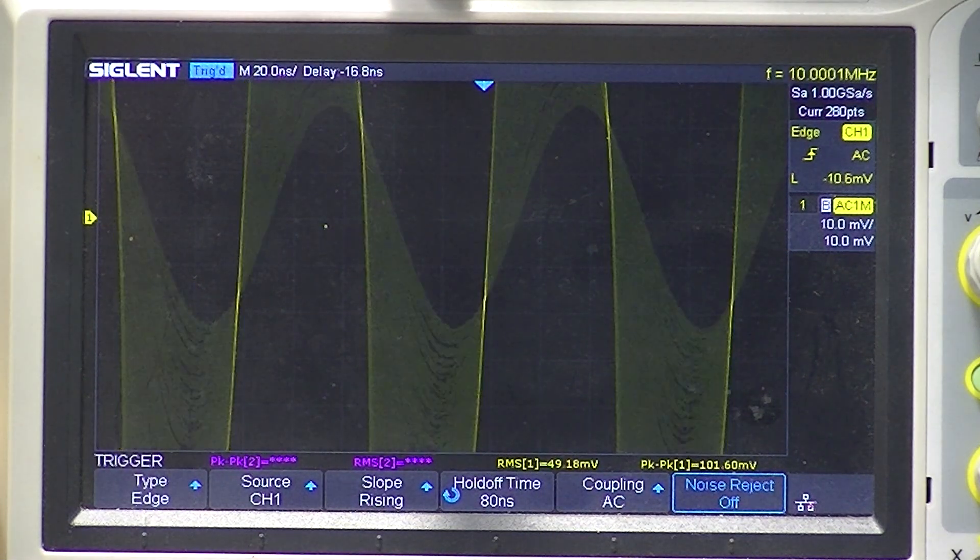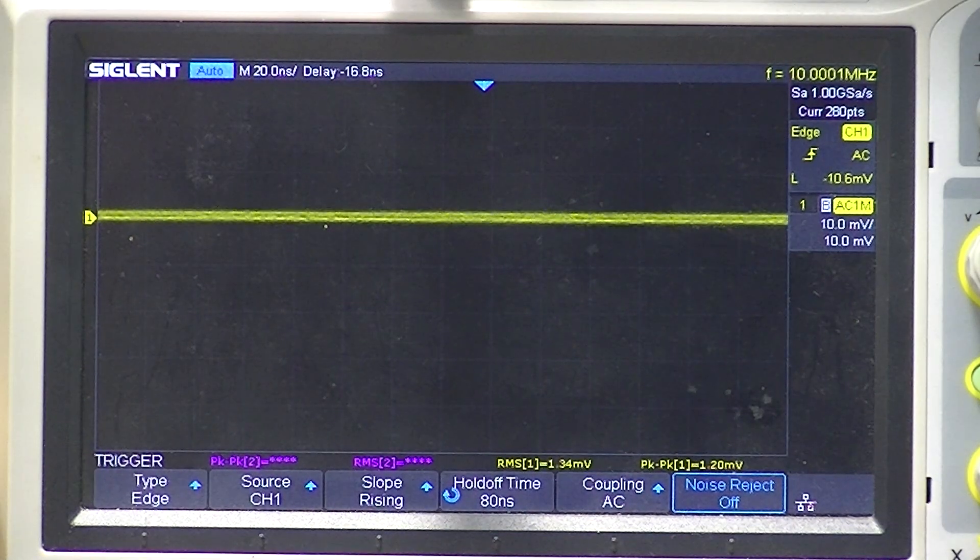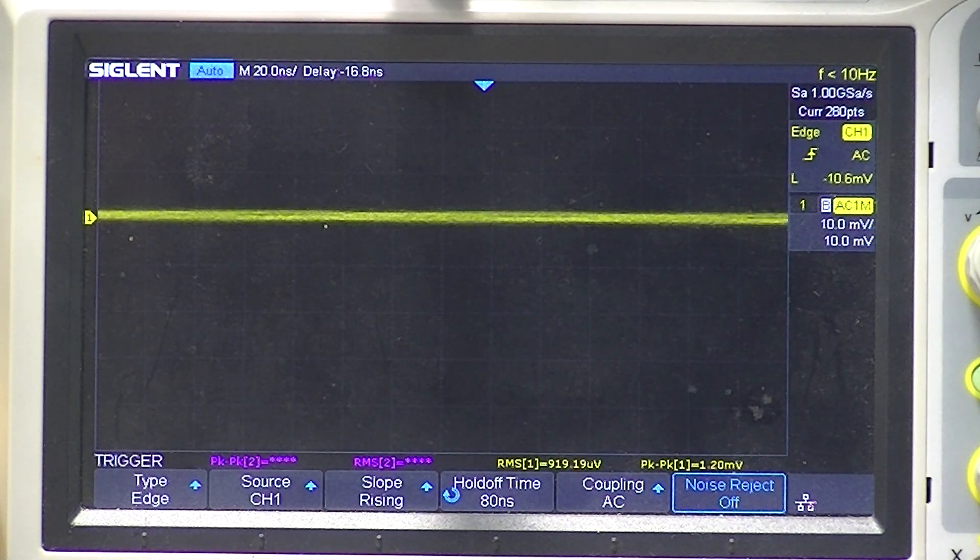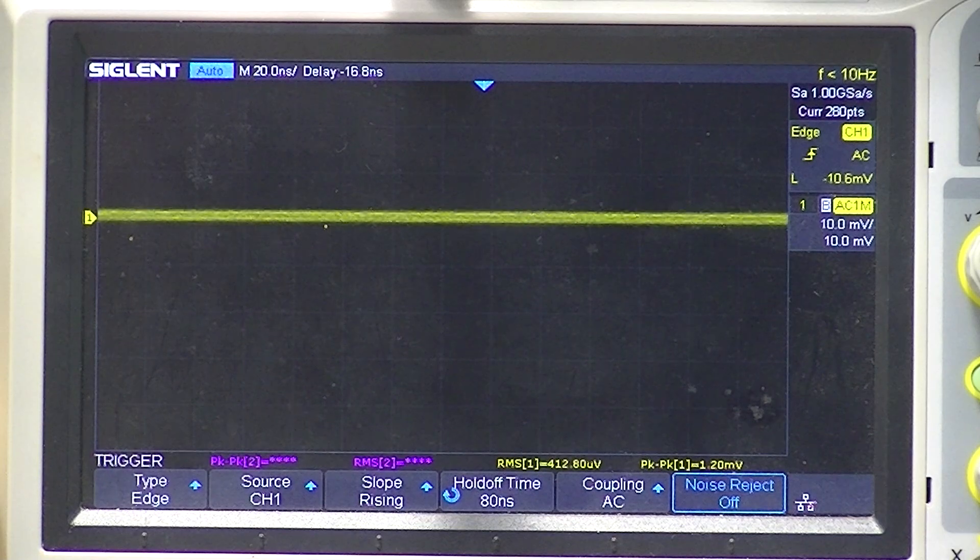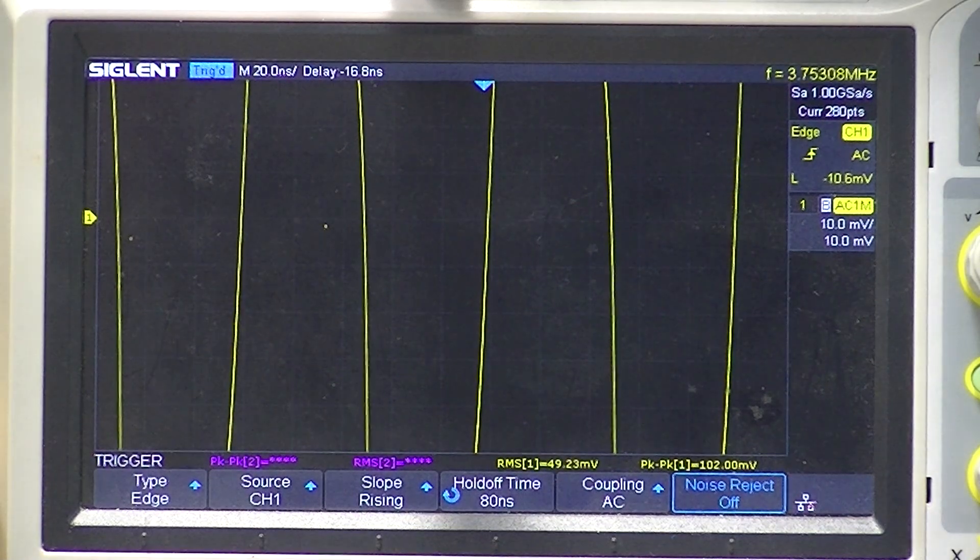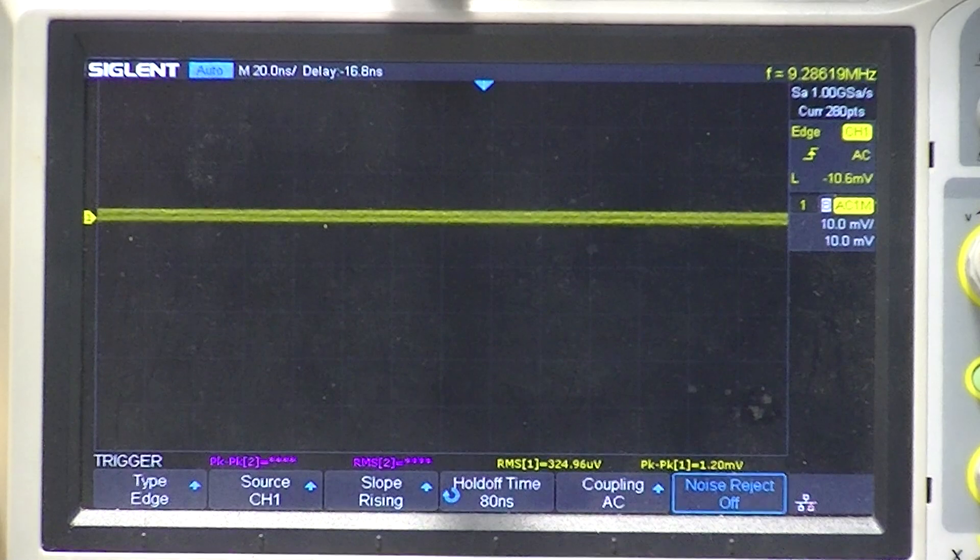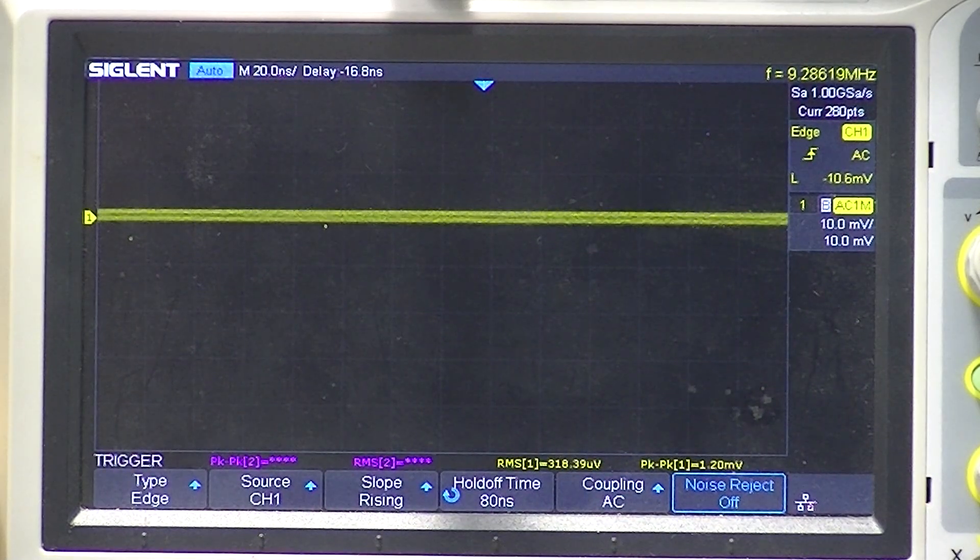Now I can't put the amplifier into oscillation. Well, I think I can. There we go. I'm holding a screwdriver across the two toroids. It doesn't do it all the time, but see that? And of course it's oscillating at 10 MHz.